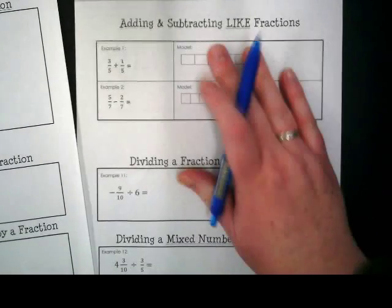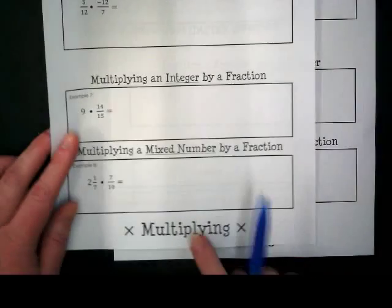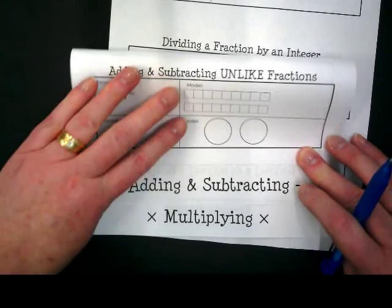Set the cover aside for just a minute. On the other side of the cover you will see adding and subtracting like fractions and dividing fractions by an integer. The paper that you want is the one that says multiplying first. And I want you to fold that down so adding and subtracting is right above it, just like that.